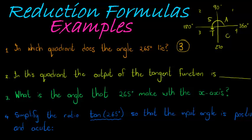In this quadrant, the output of the tangent function - what is the output of the tangent function in the third quadrant? We see that we have a T here, and that T means that only tan is positive in this quadrant. So we can answer: the output of the tangent function is positive. So if it is positive, we know that it's equal to the same ratio in the first quadrant.